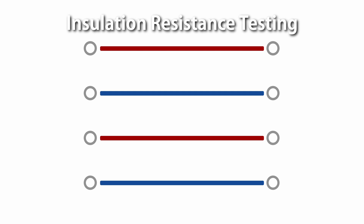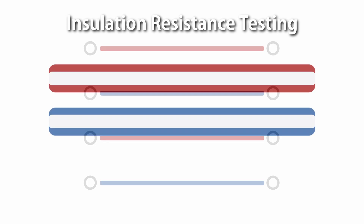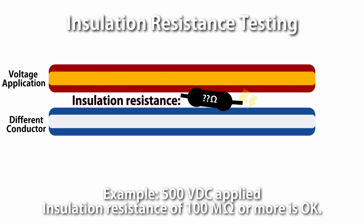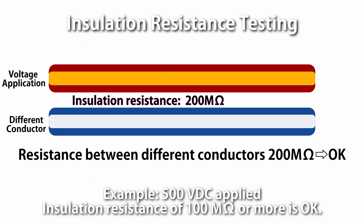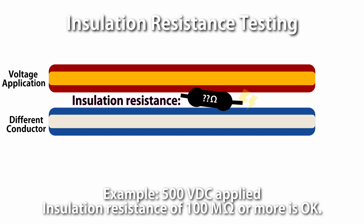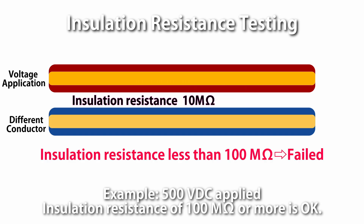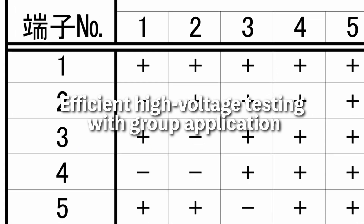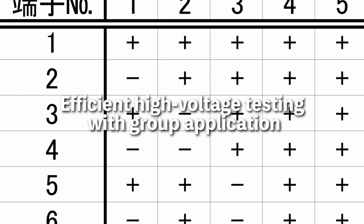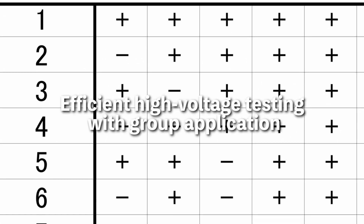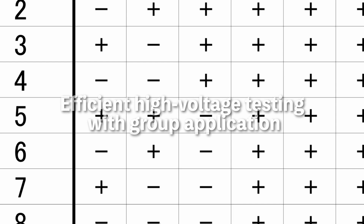In the insulation resistance testing, high voltage is applied to measure and determine the resistance between different conductors. By applying to multiple circuits at once, cable harness testers can perform HIPOT testing efficiently.